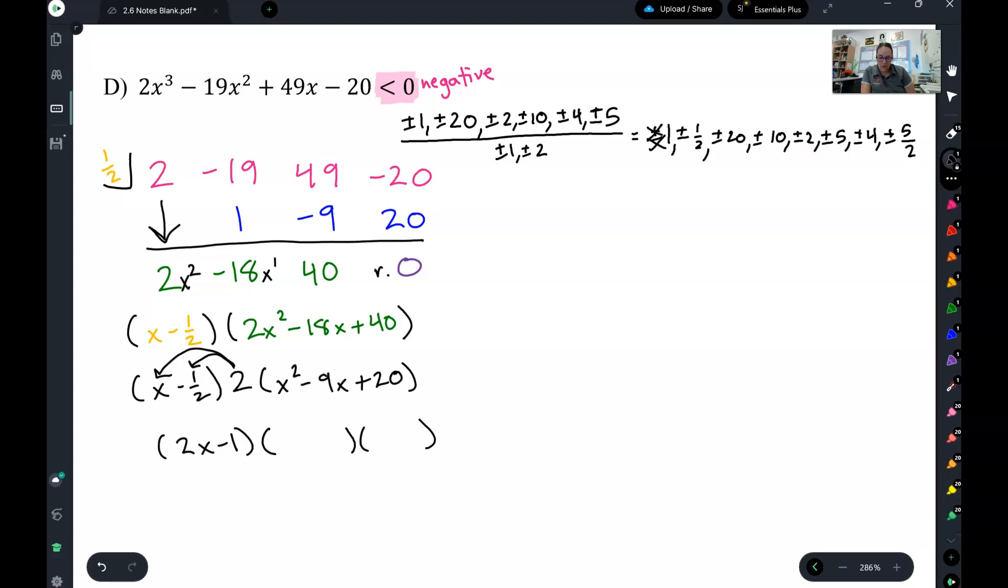Now that I took the 2 out, this is my easier method of factoring, nothing in front of my x squared. So I multiply to 20 and add to negative 9. That gives me negative 4 and negative 5. And ta-da! This is all factored.